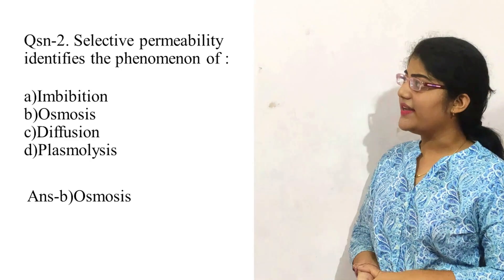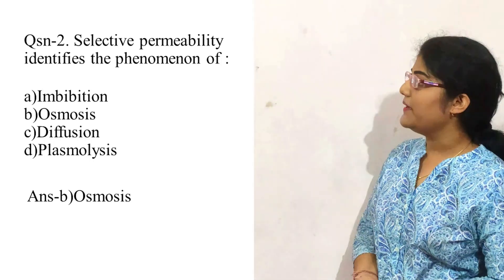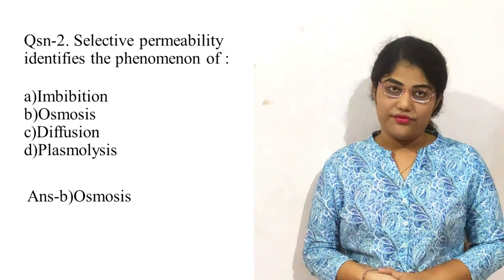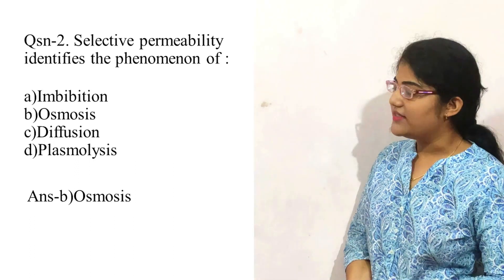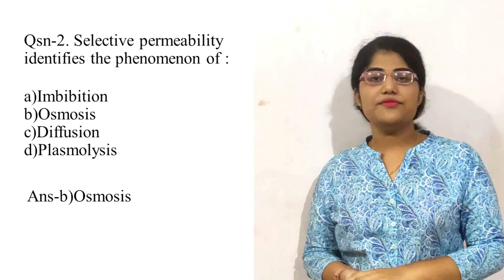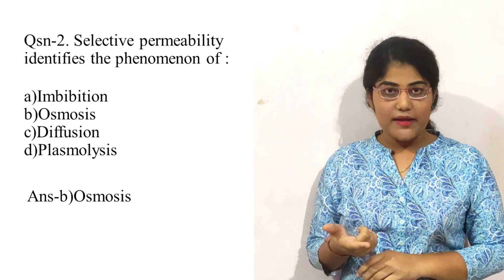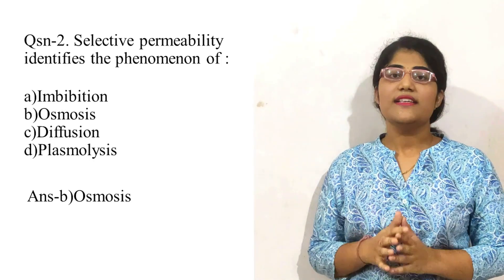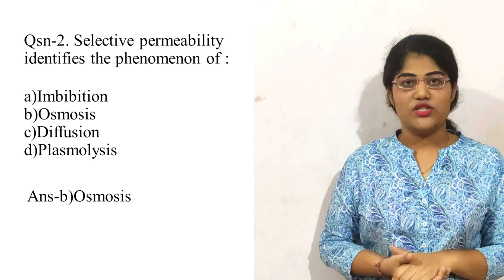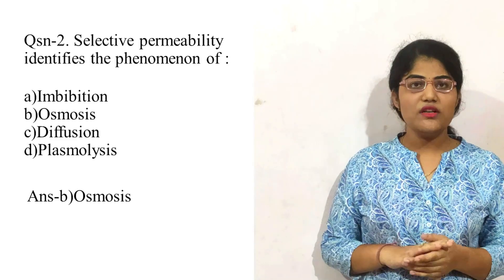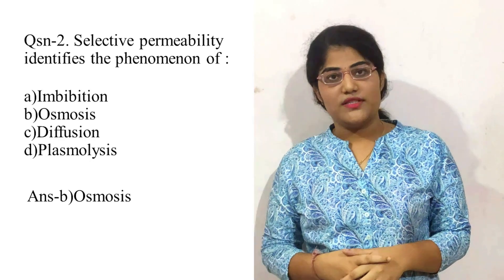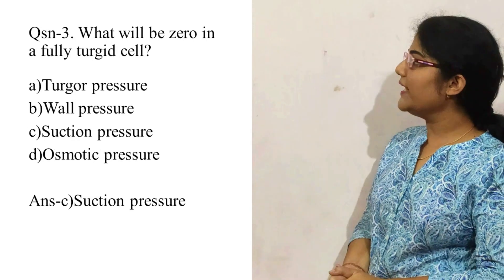Question number two: selective permeability identifies the phenomenon of which process? The options are option A is imbibition, option B is osmosis, option C is diffusion, and option D is plasmolysis. In our class we discussed that membrane permeability is of four types: permeable, impermeable, selectively permeable, and semi-permeable. The correct option is option B, that is the osmosis process.